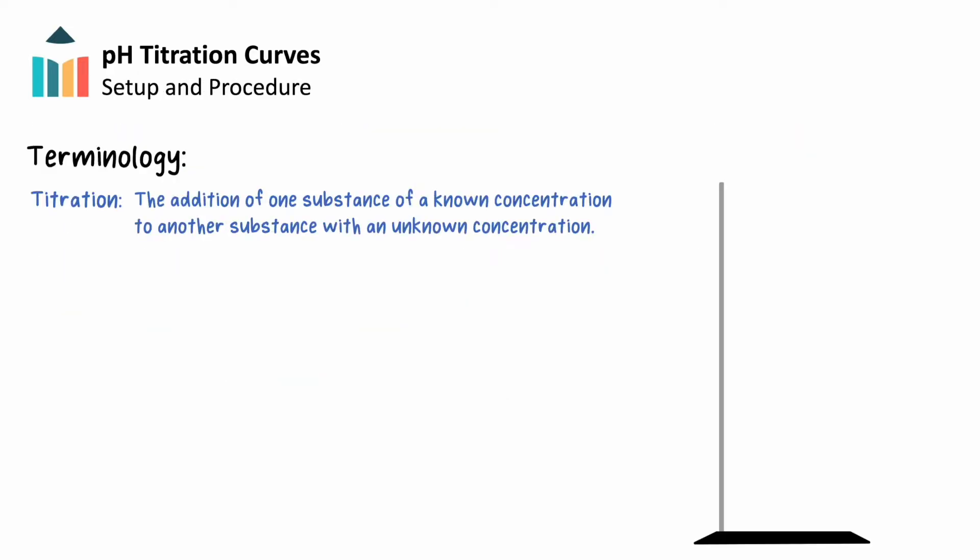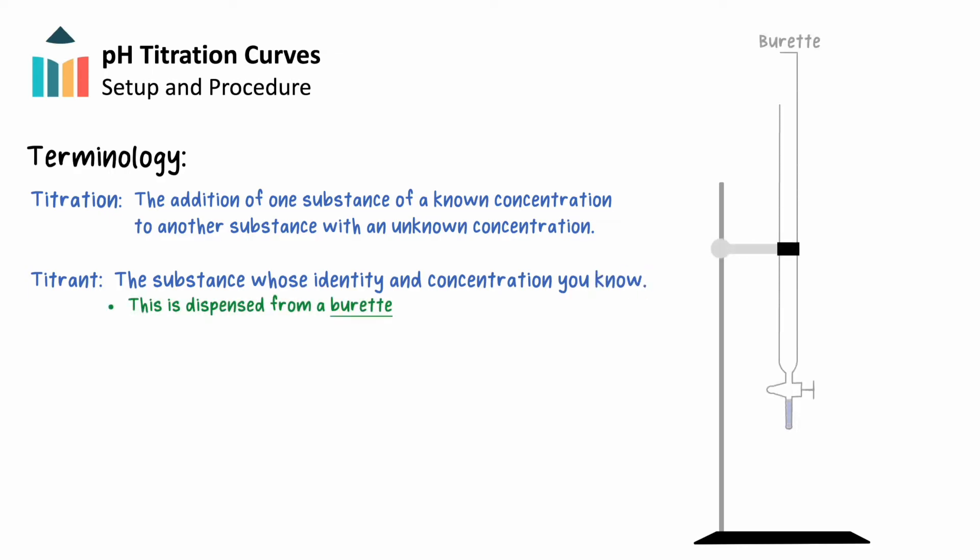Let's start by discussing how we can set up a titration experiment and what we can expect from the general shape of our titration curve. Remember that in a titration, you have one substance of which you know its concentration and identity. That substance is called the titrant. We'll add our titrant to a burette, from which it will be carefully dispensed during the experiment. A burette is a piece of glassware that can make very precise measurements, so it's essential that we're using this piece of glassware correctly.